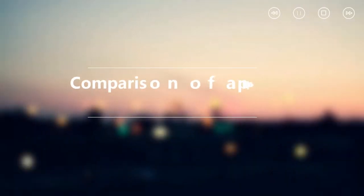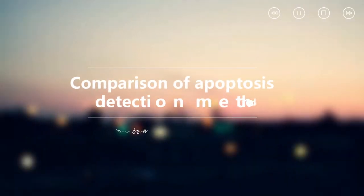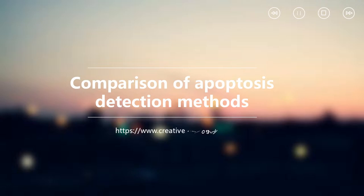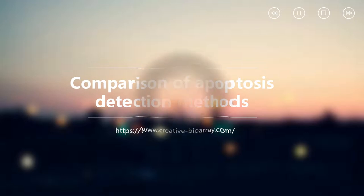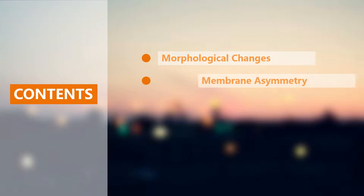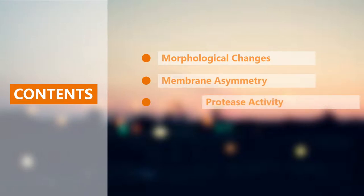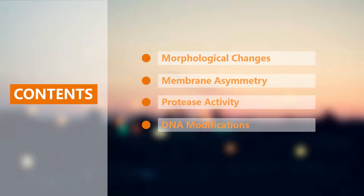Apoptosis is a form of programmed cell death and is critical for numerous normal physiological processes including cellular homeostasis, embryogenesis, and post-embryonic development. Apoptosis is characterized by several biochemical features including cell shrinkage, membrane blebbing, chromosome condensation, nuclear fragmentation, DNA laddering, and the eventual engulfment of the cell by phagosomes.